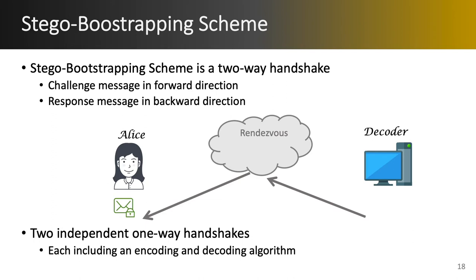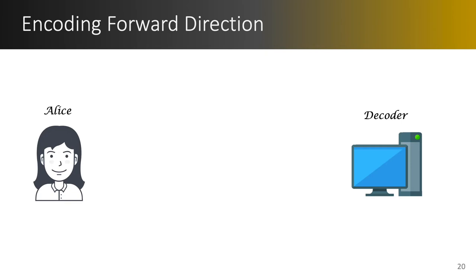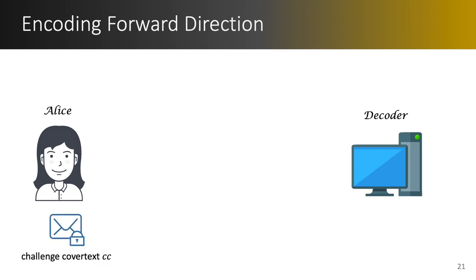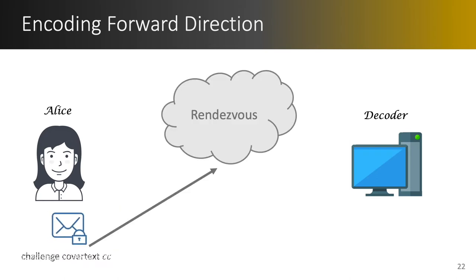Let me give you more details on how our scheme is defined. The scheme consists of four algorithms. The first is the encoding scheme in the forward direction. The censored user Alice uses the decoder's public key — which is known to everyone — to encode the challenge message that incorporates a tag along with her own public key. We can think of this as a key encapsulation mechanism where Alice encapsulates her public key for the decoder to later use to reply to her. Now having the challenge cover text, Alice sends it to the rendezvous.